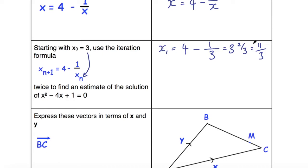Okay, so x₁ is 11/3, and x₂—I need to do it twice—so I take that answer and substitute it into this form there again, and I get 4 - 1/(11/3).